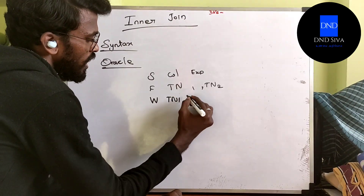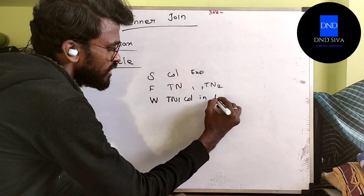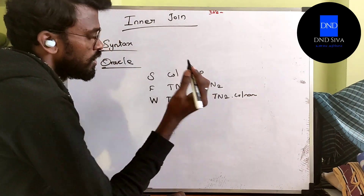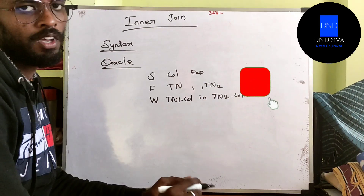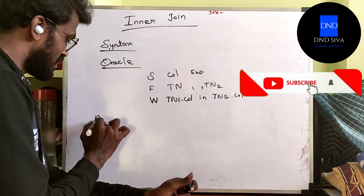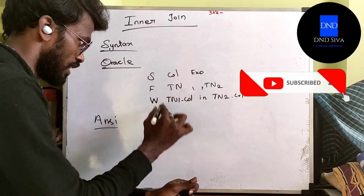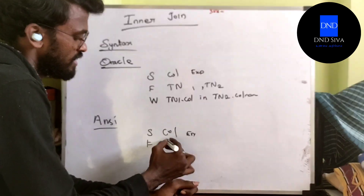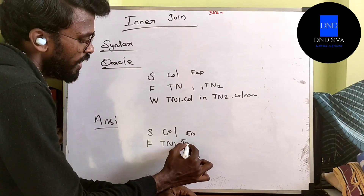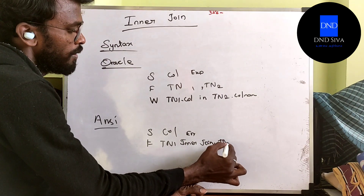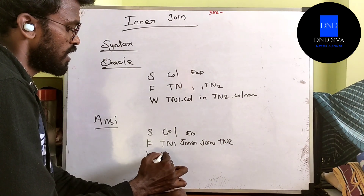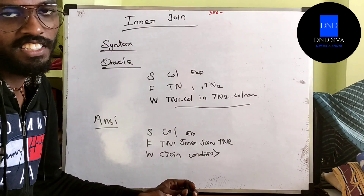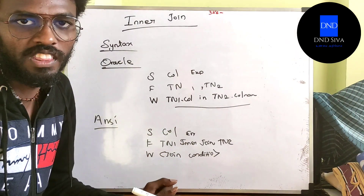Table name 1 column name equals table name 2 column name. ANSI syntax for inner join is in two ways: SELECT column name expression FROM table name 1 INNER JOIN table name 2 WHERE condition.